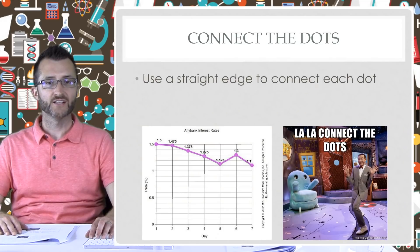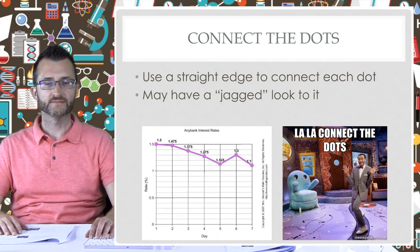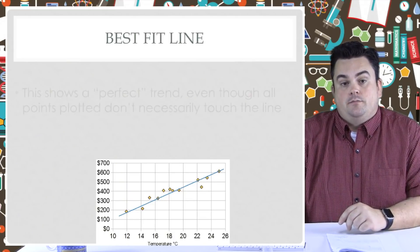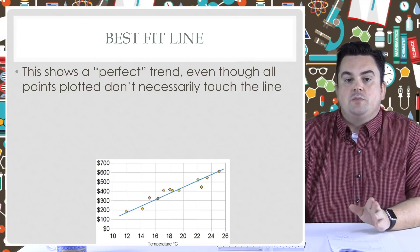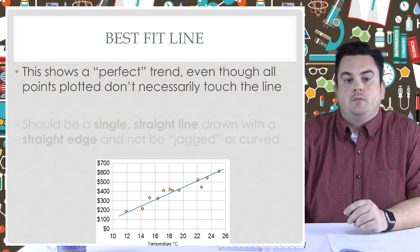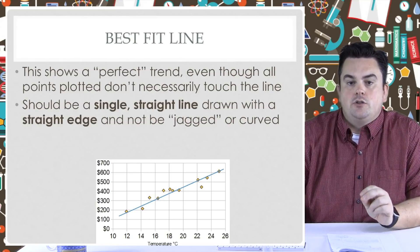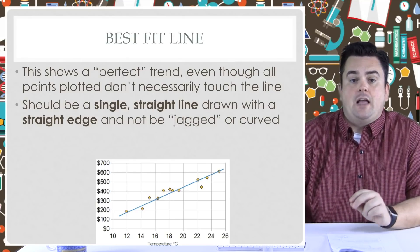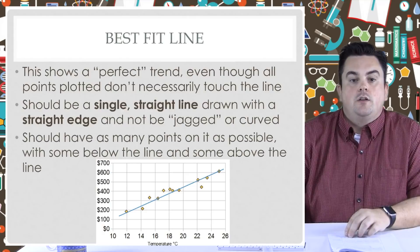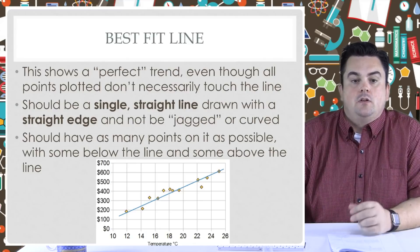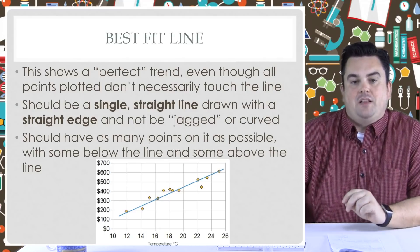Connect the dots. Use a straight edge to connect each dot — may have a jagged look to it. Best fit line: this shows a perfect trend, even though all points plotted don't necessarily touch the line. Should be a single, straight line drawn with a straight edge and not be jagged or curved. Don't lift your pencil. Should have as many points on it as possible, with some below the line and some above the line. These graphs are allowed to vary by student — not every student is going to have the exact same best fit line.